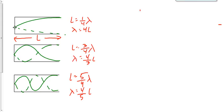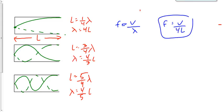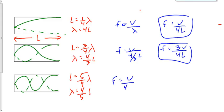Then, doing the same as with the string: F equals V over lambda. In the first case, F equals V over 4L. For the string it was V over 2L — now it's V over 4L. This is why I don't want you to memorize the equations; you'll mix up V over 4L with V over 2L and apply it in the wrong spot. The next one: F equals V over four-thirds L, which simplifies to 3V over 4L. The third: F equals V over four-fifths L, which simplifies to 5V over 4L.